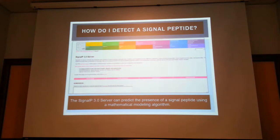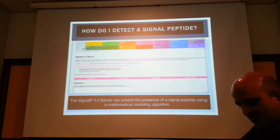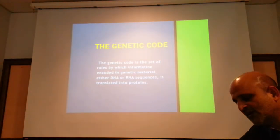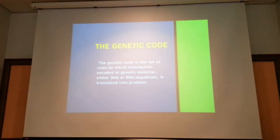For this module, we can begin by looking at signal peptide detection. Signal peptide detection is done using a software algorithm called SignalP 3.0 server. All you have to do is copy and paste your sequence in this server window in the GUI, and it will predict your signal peptide.